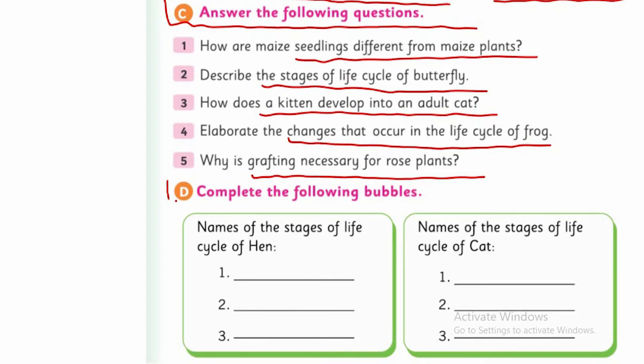Dear students, some interesting bubbles are here. You need to write answers, do brainstorming, and think about what suitable words should be written. Names of the stages of life cycle of hen - you've studied it, very easy, three stages. Just write the names of the steps of hen life cycle. Then life cycle of cat - also three stages, very easy. You can do it easily, and I'm sure you will.